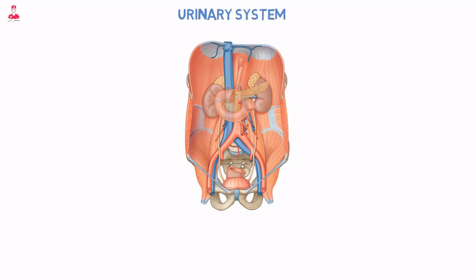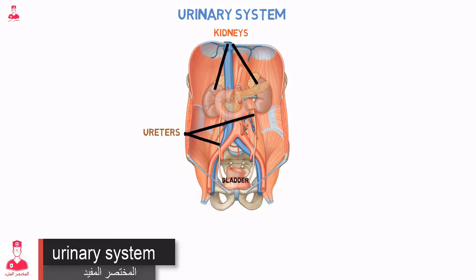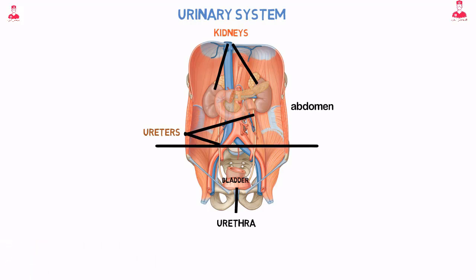The structures of the urinary system include the kidneys, ureters, bladder, and urethra. Those that are located within the abdomen are the kidneys and ureters. The bladder and urethra are located in the pelvis.